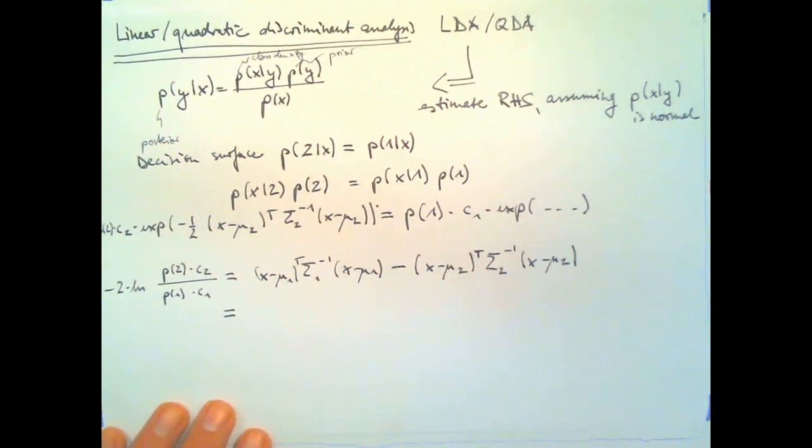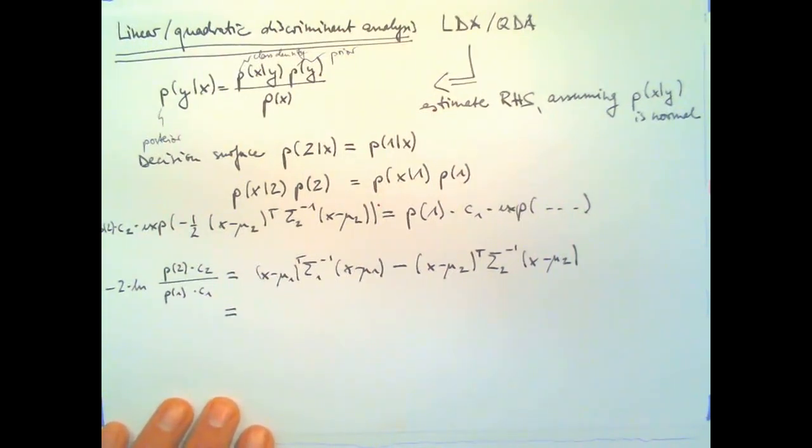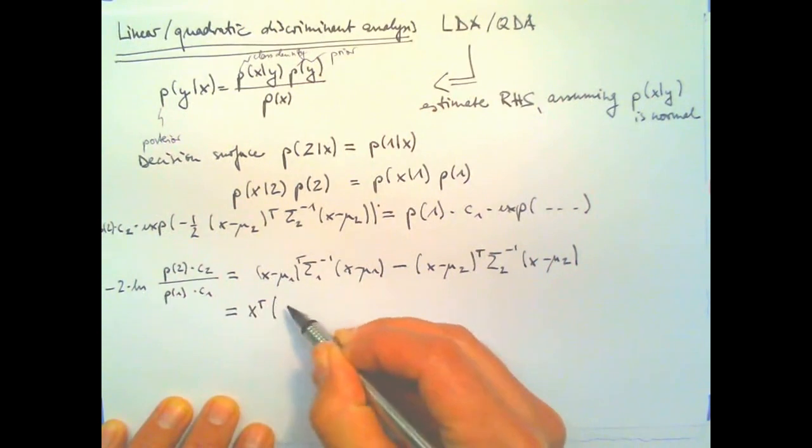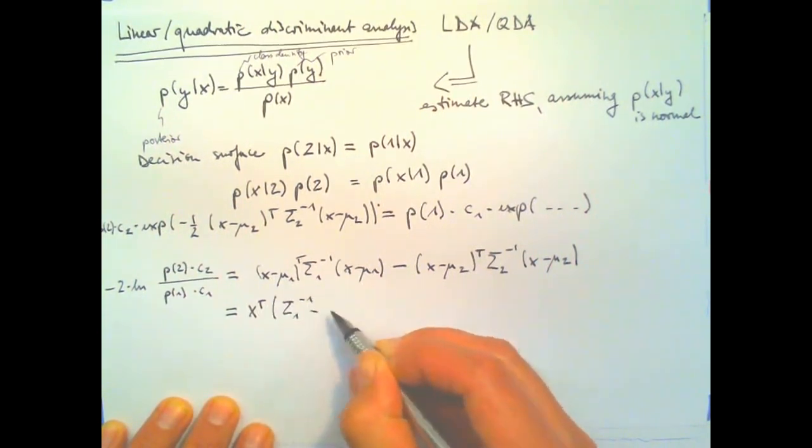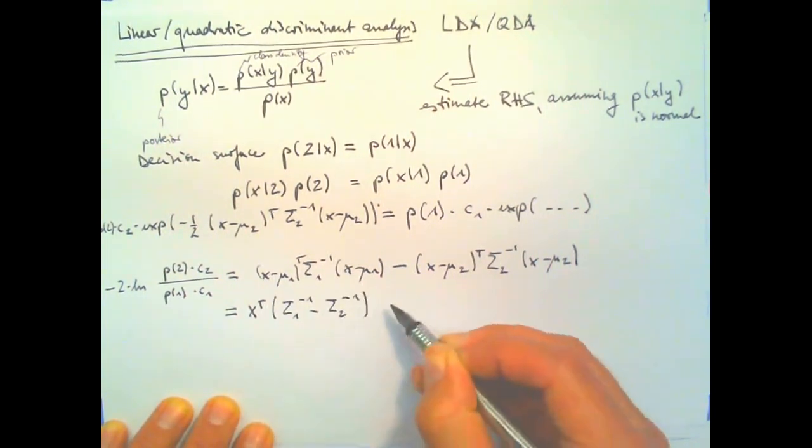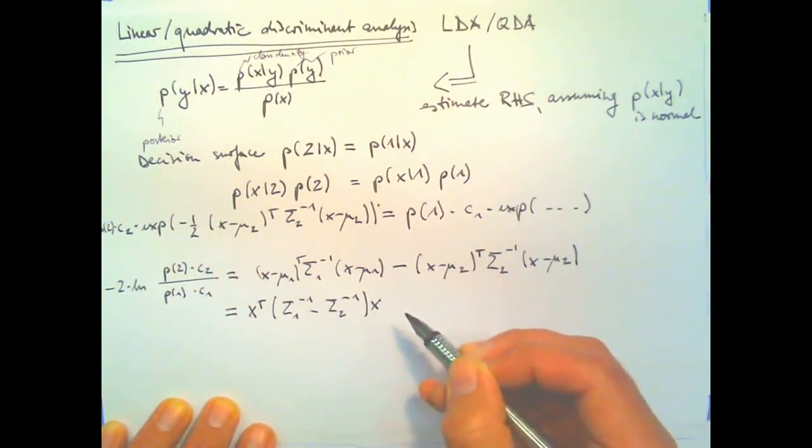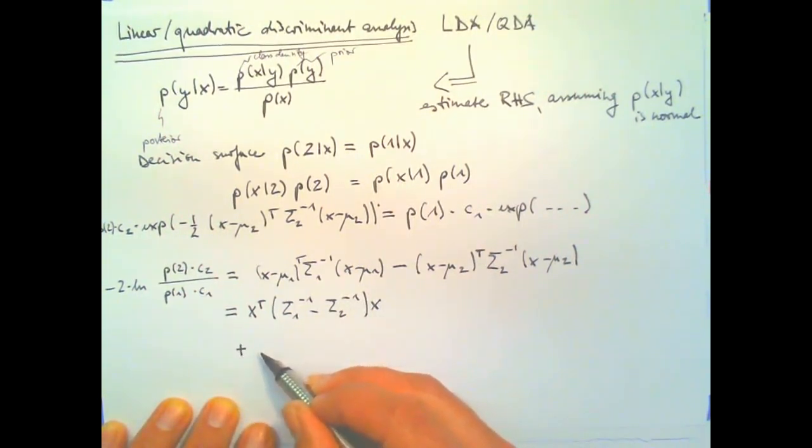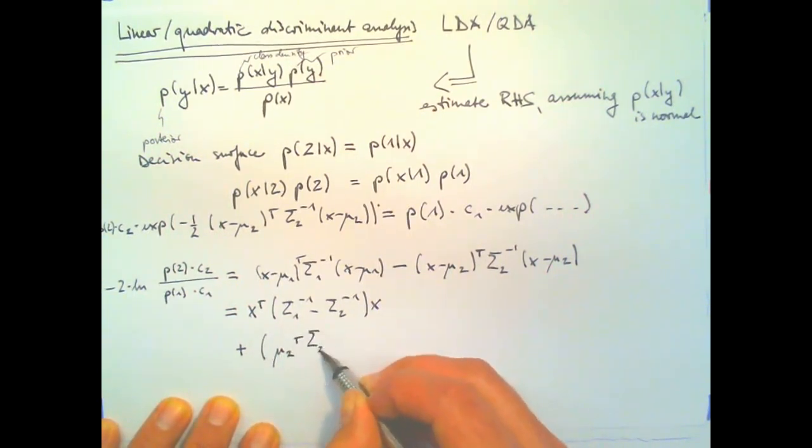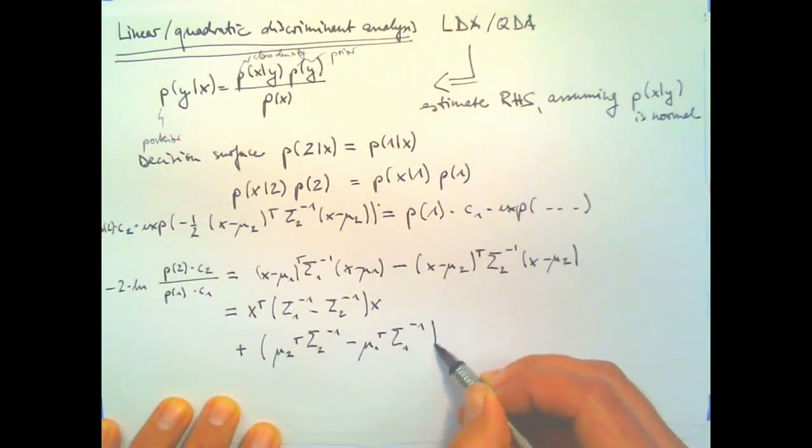So, I'm first looking for everything that's bilinear in X. And, then, I'm looking for everything that's linear in X. Which is, well, minus two times. Here are the minus two that I forgot.